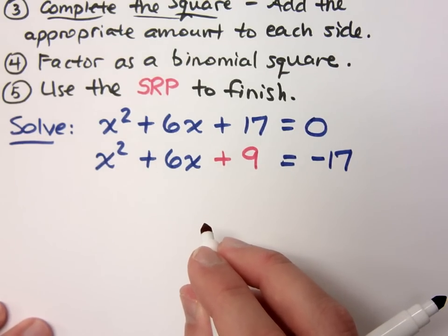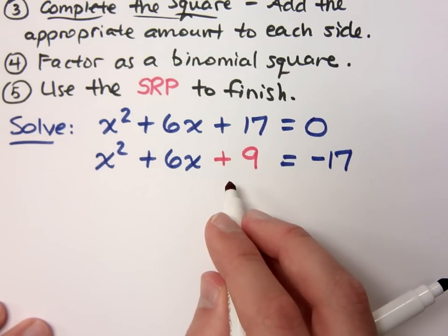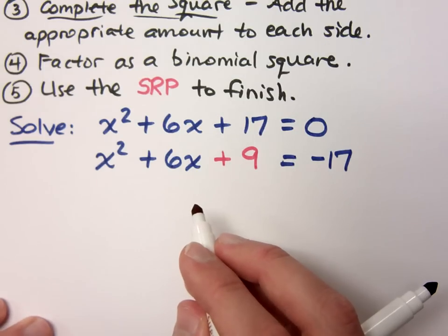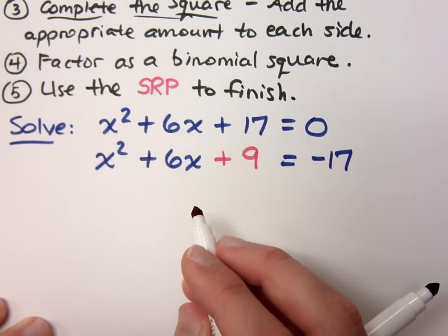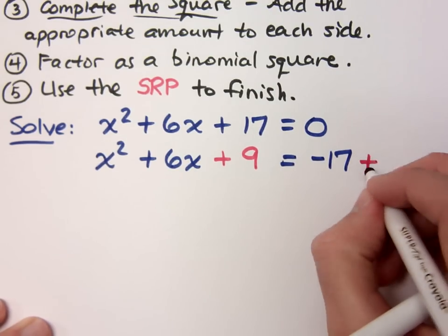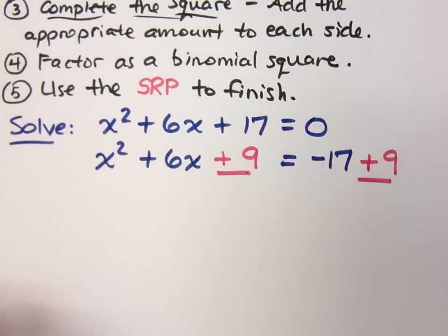Can I just add nine and be okay? Add the appropriate amount to each side. Why do I have to add it to each side? Because what you do to one, you have to do the other. What I do to one side, I have to do to the other. So if I add nine on the left, it changes the problem. If I add it to the right side as well, then I still have done a valid operation with my equation, right?